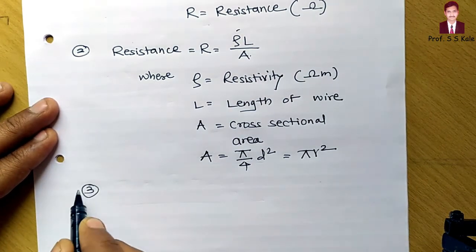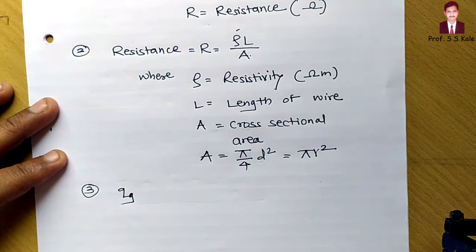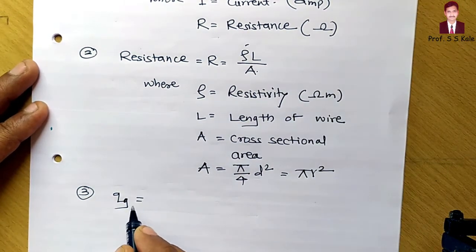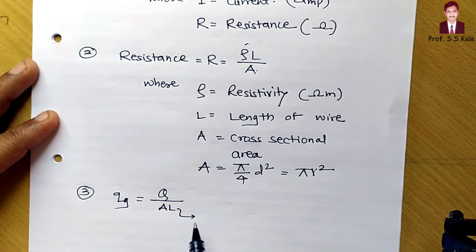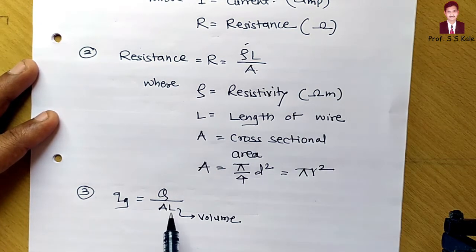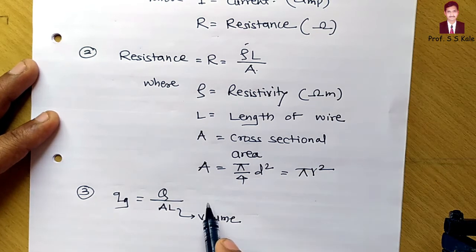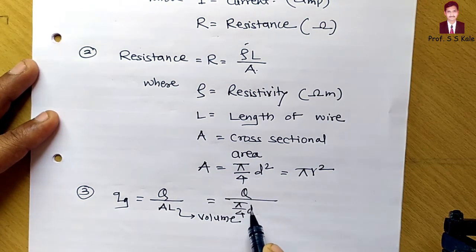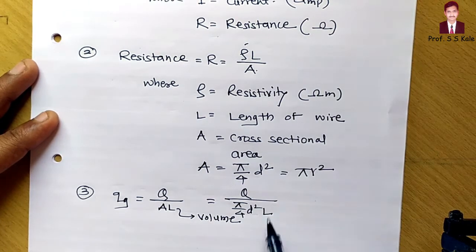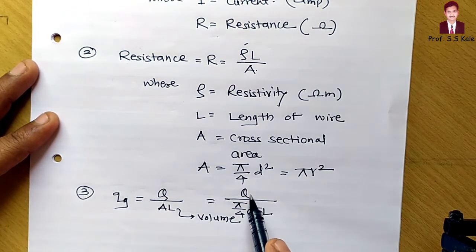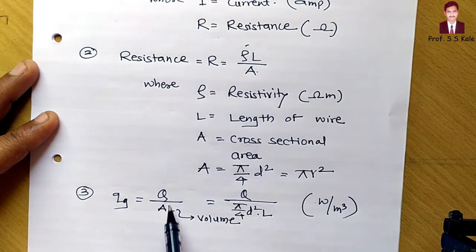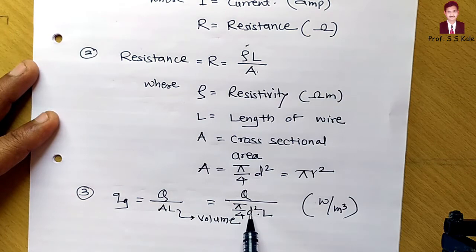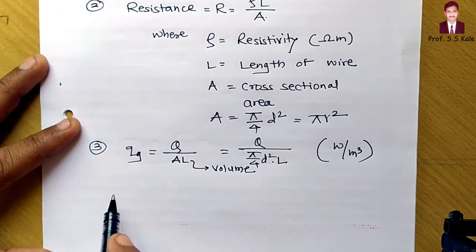The third formula is heat generation qg, which is heat transfer divided by volume. The volume of the wire is cross-sectional area times length, so qg equals Q divided by (pi/4 times d-squared times L). Its unit is watt per meter cube, since it's heat transfer per unit volume.